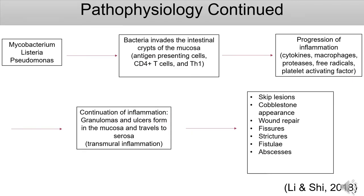Going in depth with the pathophysiology. First, Mycobacterium, Listeria, or Pseudomonas will invade the intestinal crypts of the superficial mucosa and make its way into the gastrointestinal tract. Once the bacteria has entered, inflammation is going to occur. Antigen-presenting cells show up and come in contact with the pathogen, break off a piece of that pathogen, and place it on their MHC2 receptor. An immature CD4 T helper cell binds to the antigen on the antigen-presenting cell and will now become a mature T helper 1 cell.